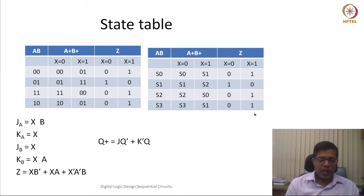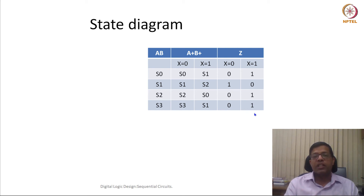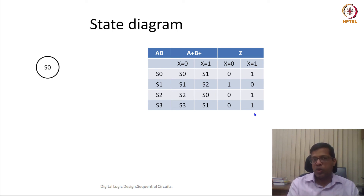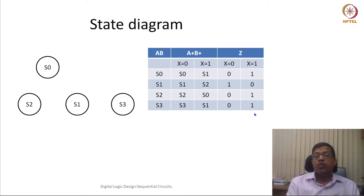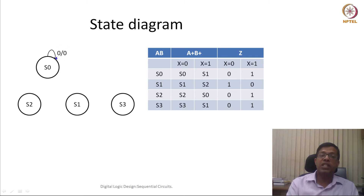Similarly, Z depends on the value of X — if X equals 0, there are these values of Z; if X equals 1, these would be the values of Z. This is how we write the state table. Using the state table, we can create the state diagram. We again have four states, but now the output depends not only on the state but also on the input. So in the circle for each state, we write only the state number: S0, S1, S2 and S3.